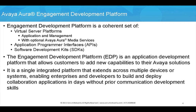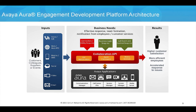EDP is a coherent set of APIs and SDKs that allow you to add new capabilities to your Avaya Aura solutions. It extends across multiple devices and systems, enabling enterprises and developers to quickly build and deploy collaboration applications that can leverage dynamic or static business rules. Another way to think of EDP is that it allows you to introduce customized features into your communications environment without being dependent on the manufacturer's code, train, and release cycle.